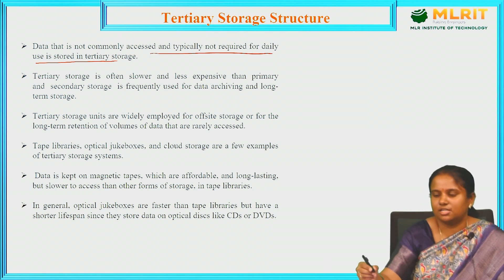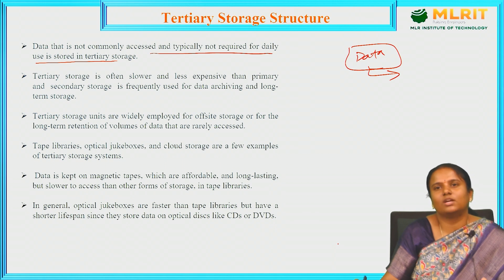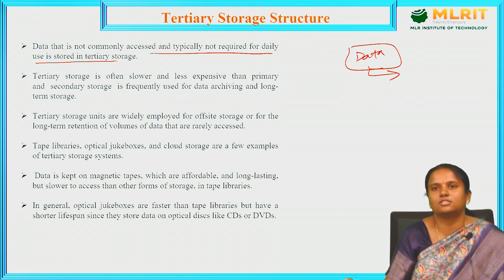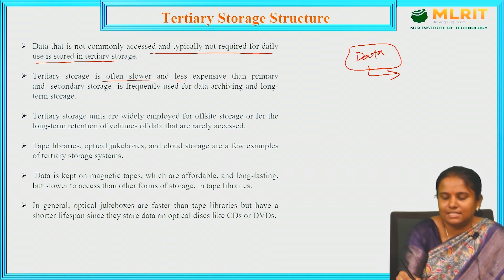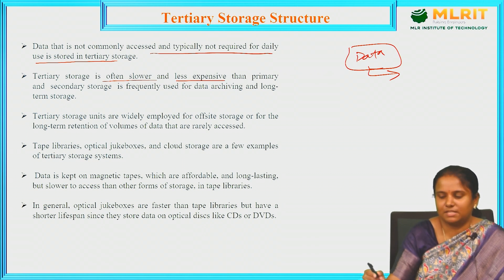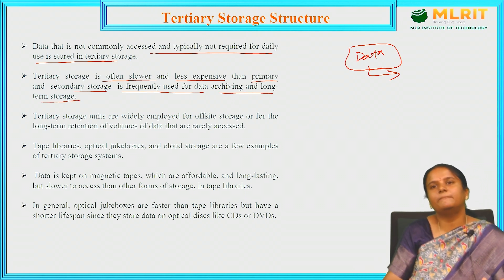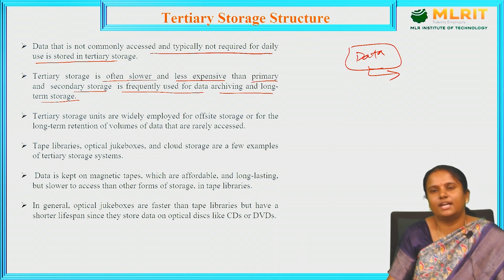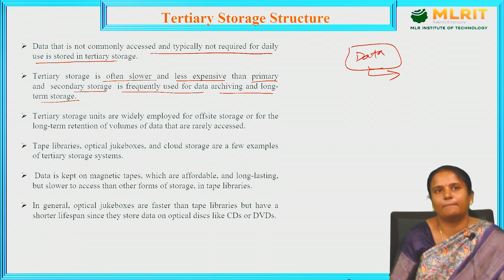The data which is not required daily is kept under tertiary storage. For example, folders you may not use daily — whenever there is a need for those files, you will browse them; otherwise they are kept aside. Tertiary storage is often slower and less expensive than primary and secondary storage, and is frequently used for data archiving and long-term storage.